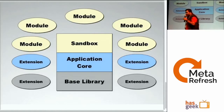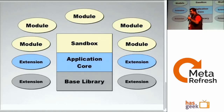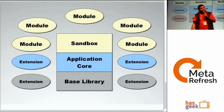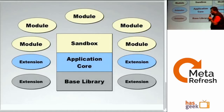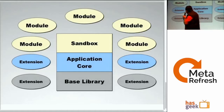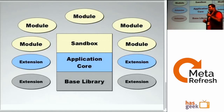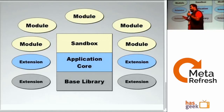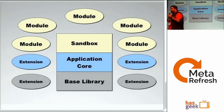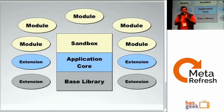There is an application core, there is a sandbox, and there is a base library. The base library is your jQuery, Dojo, or YUI — whatever you prefer to use. The theory is that each module doesn't know about other modules. The modules are very loosely coupled. None of them talks to each other. They are cleanly separated, and there is no direct communication between modules.